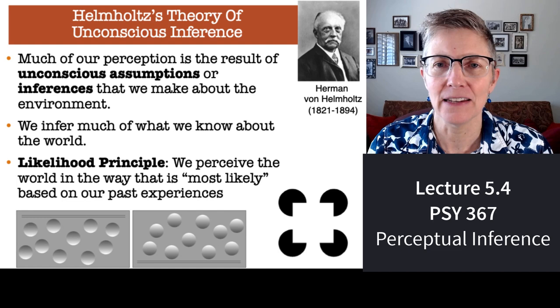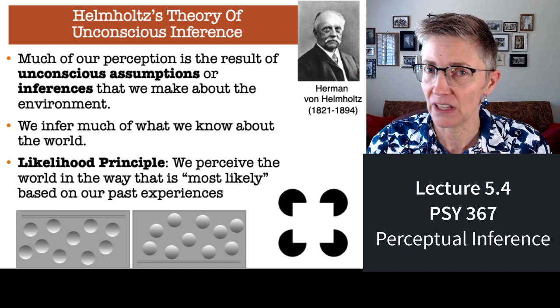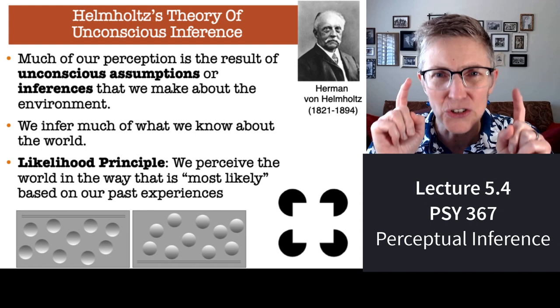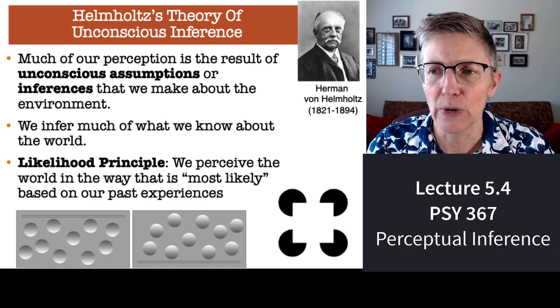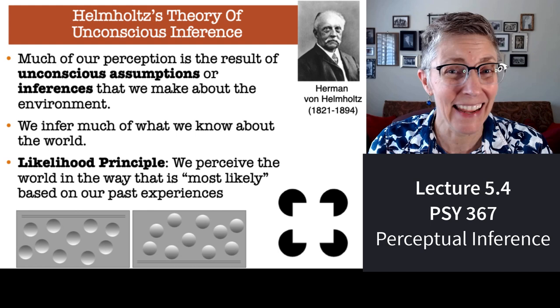This is the last mini-lecture as part of series 5, and I want to talk about a really smart fellow, a guy by the name of Helmholtz. He figured out back in the 1800s that sensations are ambiguous and perception has to rely on cognitive processes. He used a concept called unconscious inferences — the idea that unconsciously, outside of our awareness, we are drawing inferences, making assumptions, taking our best guess as to what's actually out there in the world, given the stimulation of our retina. Helmholtz argued that we infer much of what we know about the world.